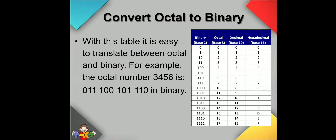Here is a table that shows the easiness of how we can convert between octal and binary. Using this table, it is easy to translate between octal and binary. For example, take the octal number 3456. We will write the binary equivalent of 3, then the binary equivalent of 4, then 5, and then 6. These are written in groups of three binary bits.